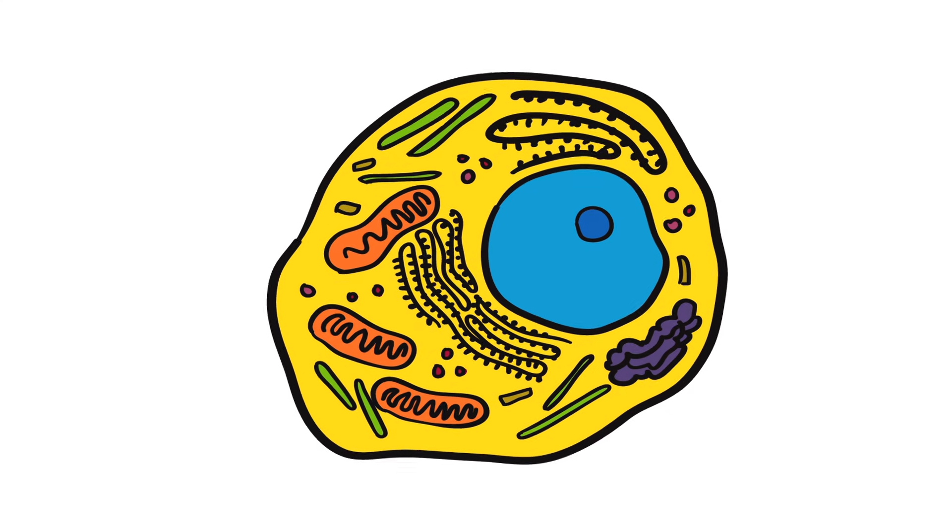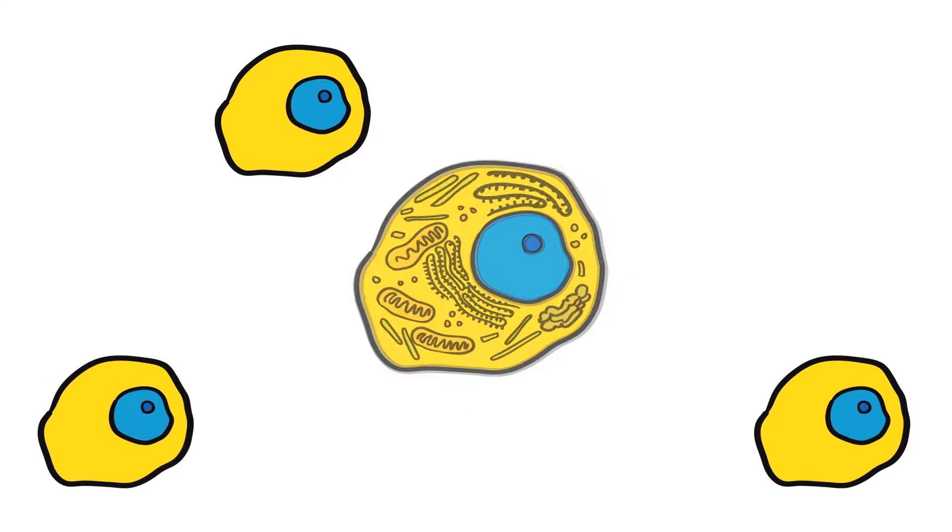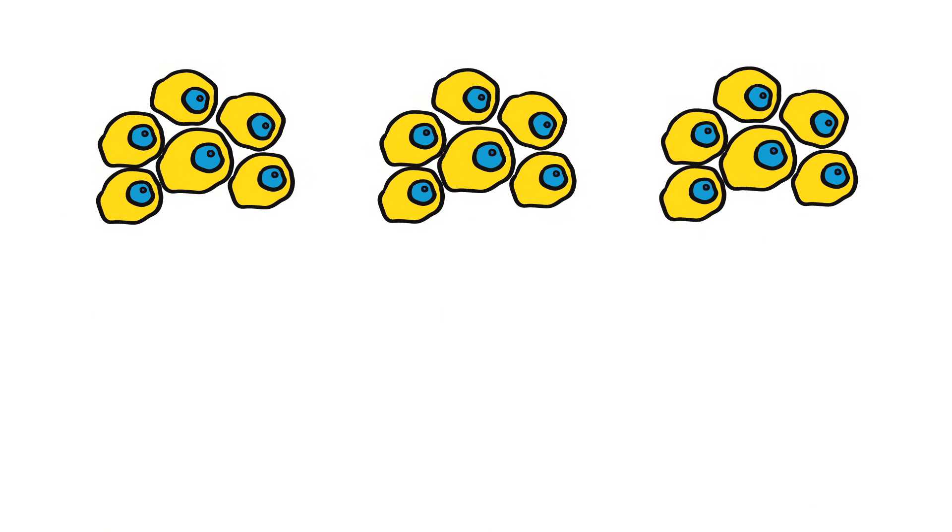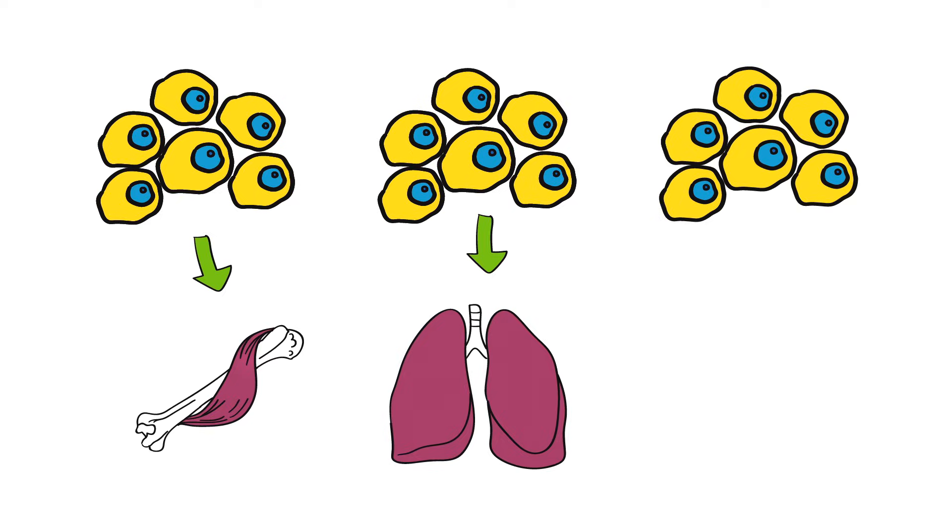Cancer is a disease that starts in our cells. Our bodies are made up of trillions of cells, grouped together to form tissues and organs, such as muscles and bones, the lungs, and the liver.